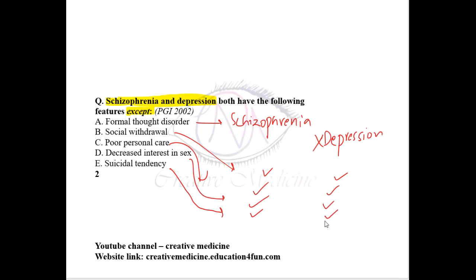Suicidal tendencies are seen in both schizophrenia and depression. Whereas formal thought disorder is seen only in schizophrenia and it is not seen in depression.